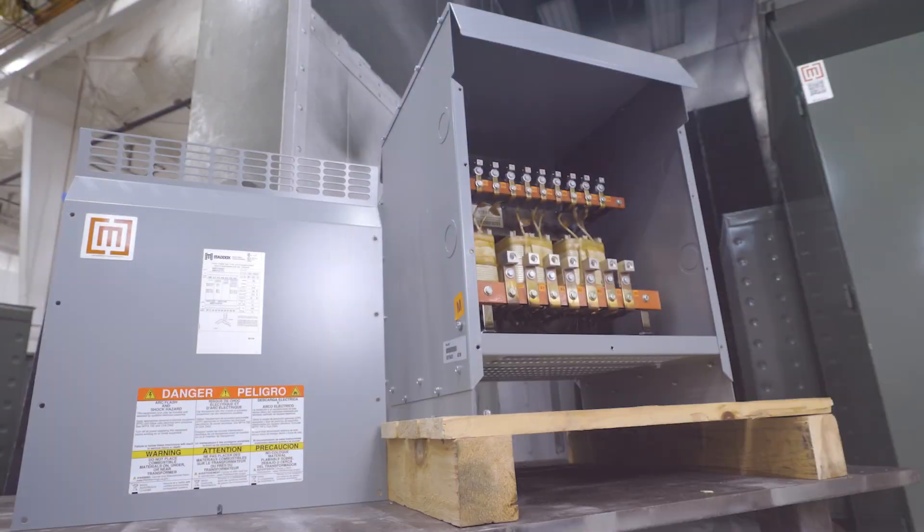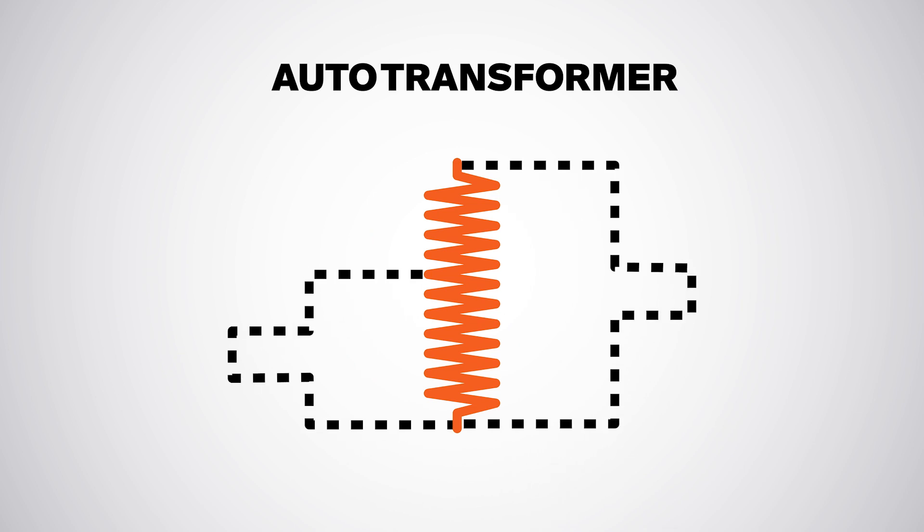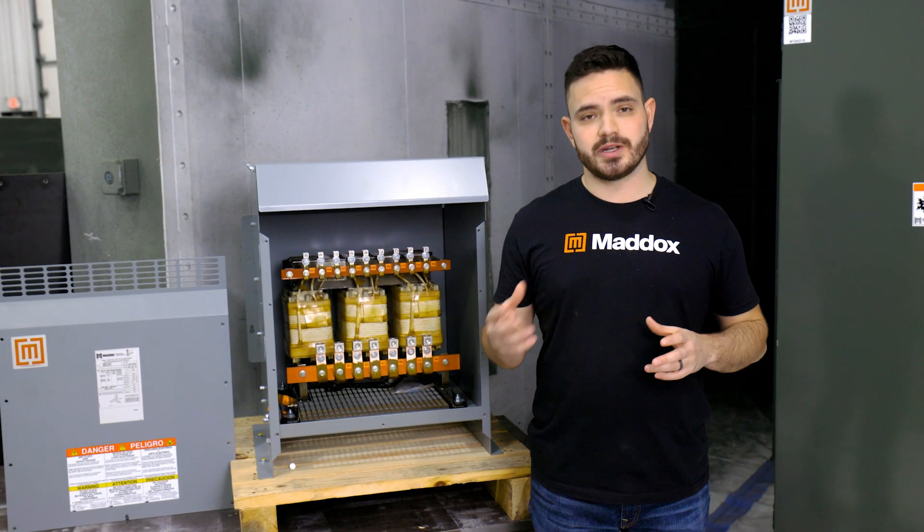An auto transformer is a type of electrical transformer that utilizes a single coil to adjust the voltage. Just like a typical isolation transformer, auto transformers change one voltage to another.